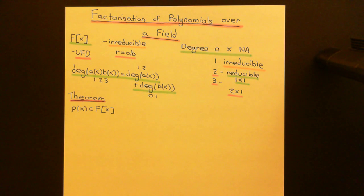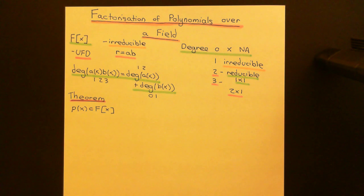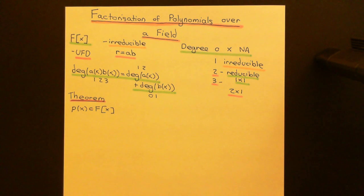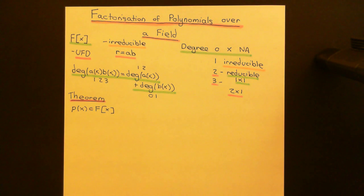So, if and only if it can be split into a product where one of those polynomials in the product is going to be a degree 1 polynomial. What we're now going to do is show a theorem which is going to give us a condition for a polynomial in a ring of polynomials over a field to have a divisor which is a polynomial of degree 1.